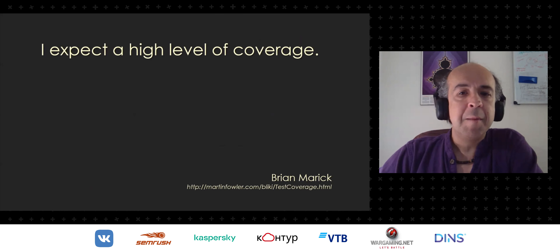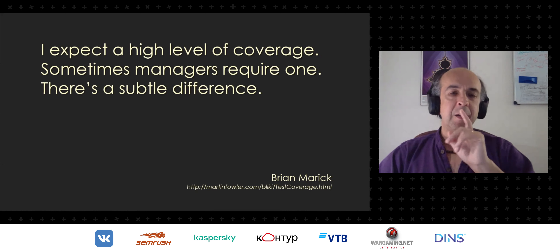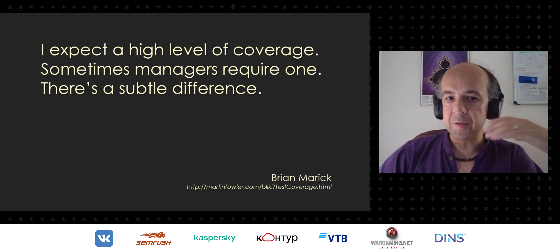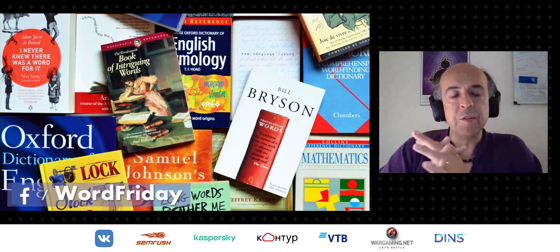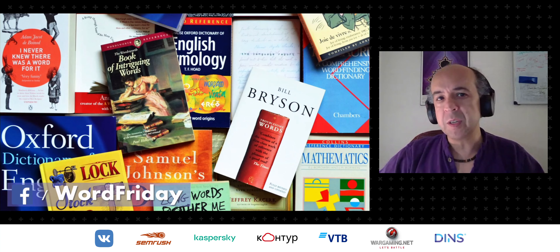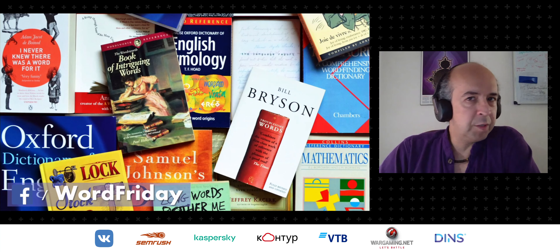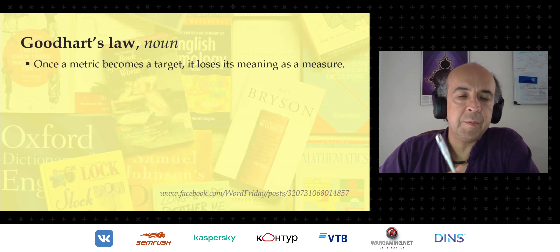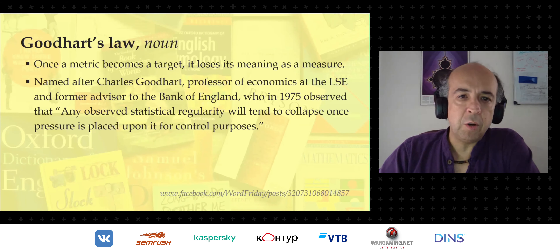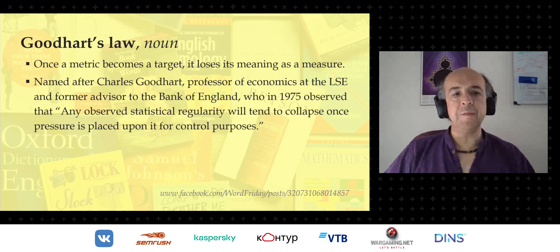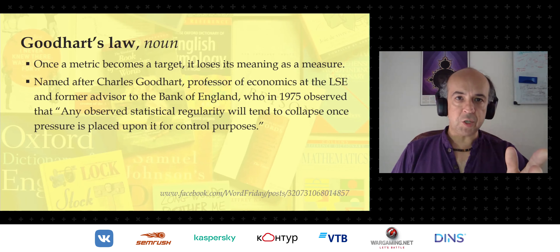As Martin says, such statements miss the point. Brian Marick observes: 'I expect a high level of coverage; sometimes managers require one' — there's a subtle difference between expecting and requiring. This relates to Goodhart's Law: once a metric becomes a target, it loses its meaning as a measure. Named after an economist from the London School of Economics, he observed that a statistical regularity will tend to collapse once pressure is placed upon it for control purposes. There is a big difference between making an observation and forcing it to be a control.